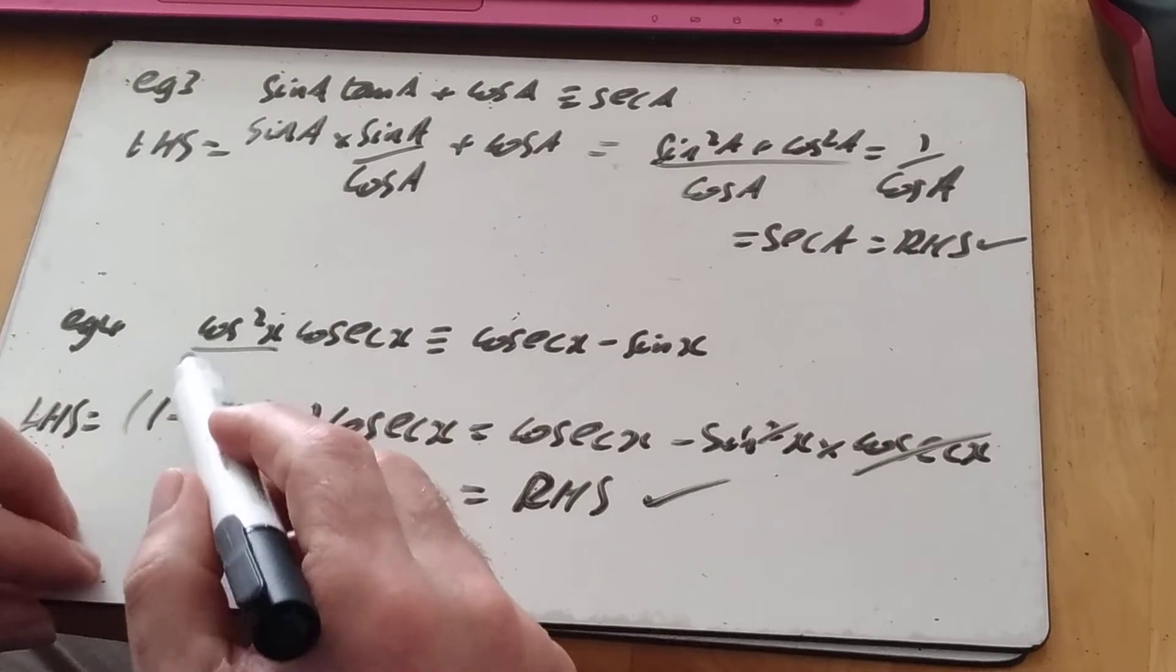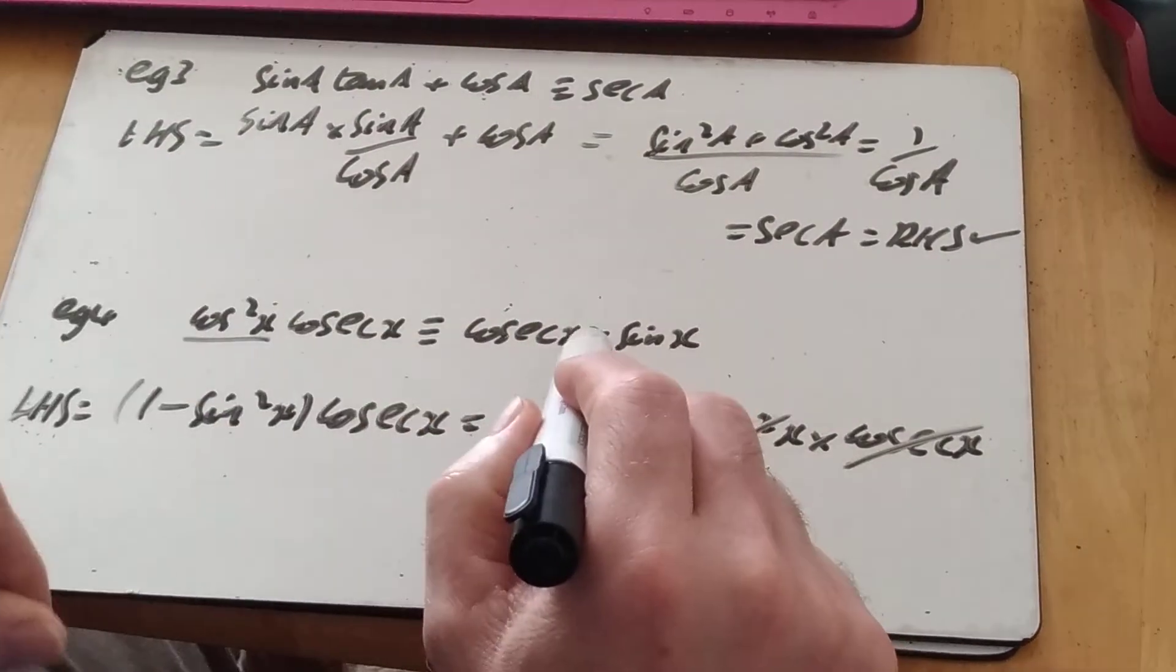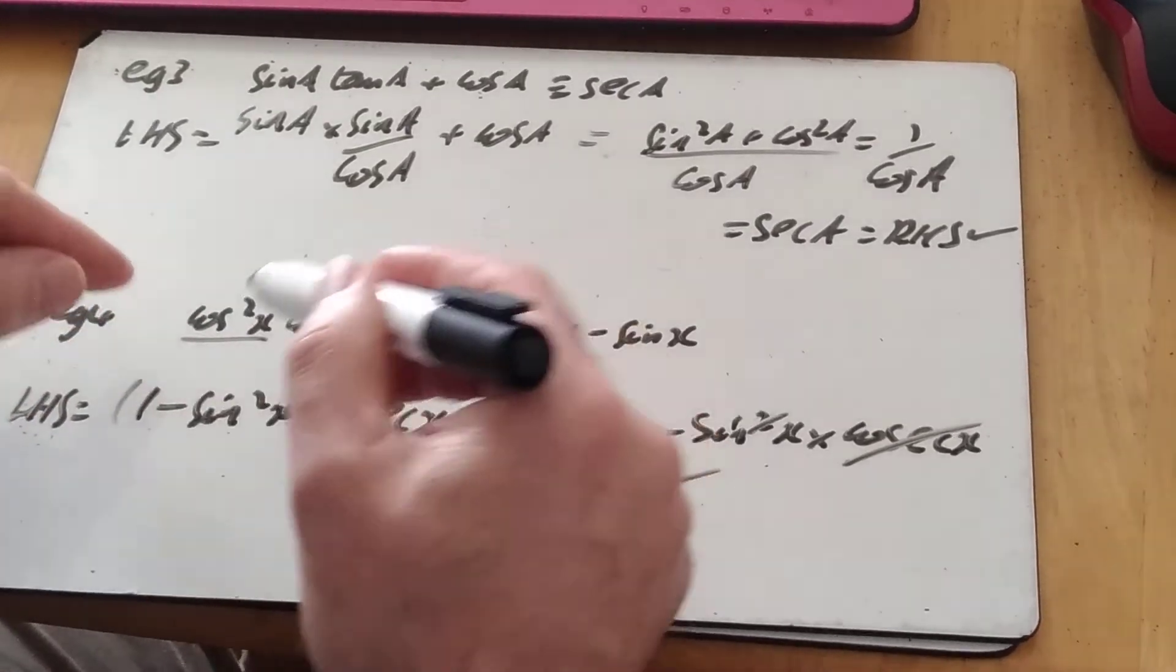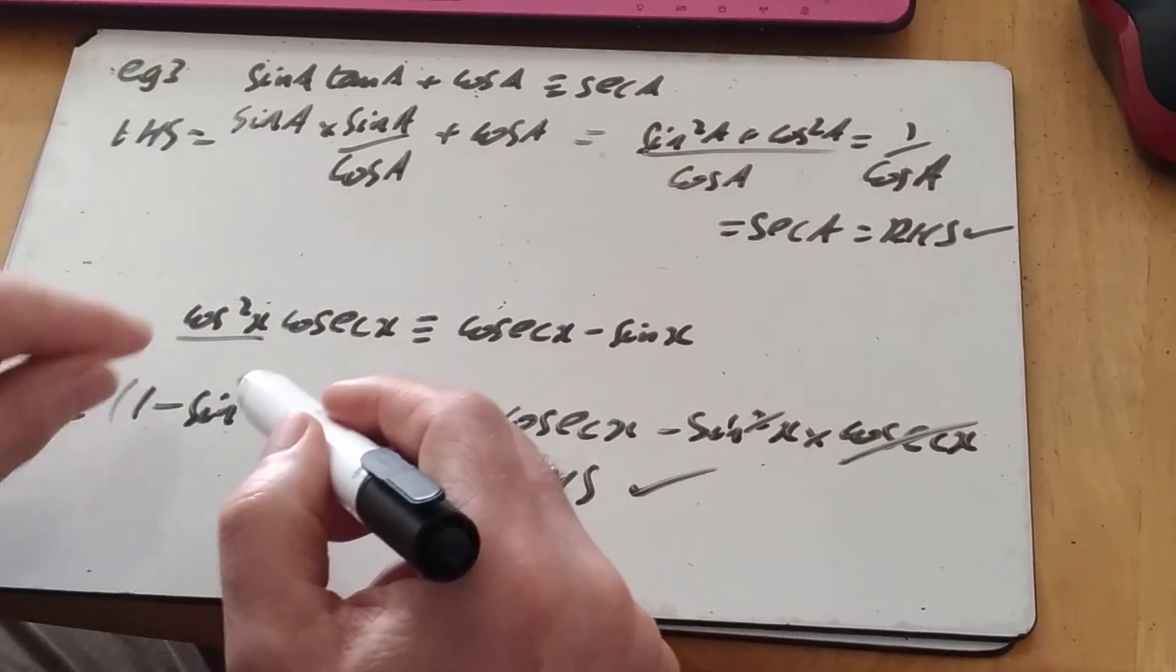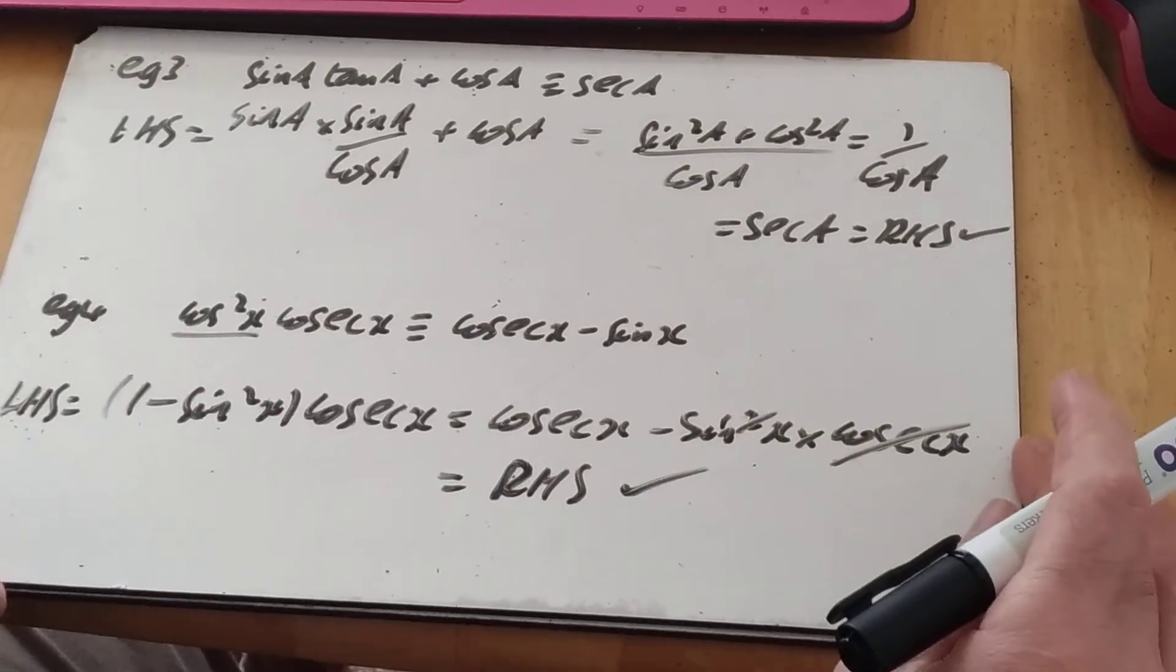So in that case then, it's spotting that I'm going from a product to two terms because of the minus. I need to rewrite one of the things then in terms of two other things. So it's probably going to be a Pythagorean identity. And that cos squared I can write as 1 minus sine squared.